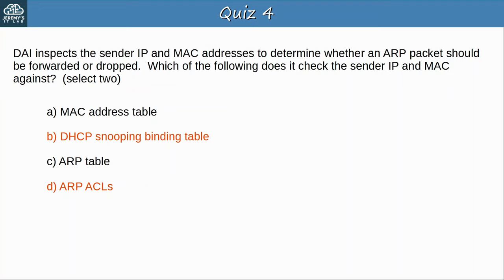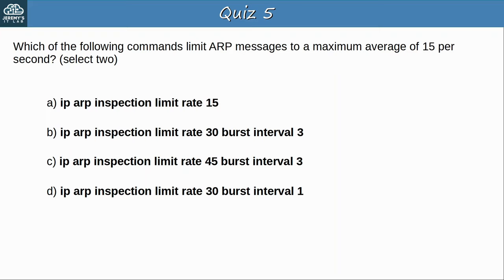Question 5: Which of the following commands limit ARP messages to a maximum average of 15 per second? Select 2. The answers are A — ip arp inspection limit rate 15 — and C — ip arp inspection limit rate 45 burst interval 3. Both limit ARP messages to an average of 15 per second. However, 45 packets over 3 seconds allows for short bursts of a higher rate — for example 30 packets in 1 second, 10 the next, and 0 the second after. The 15 packets per 1 second setting strictly ensures the rate never goes over 15 each second.